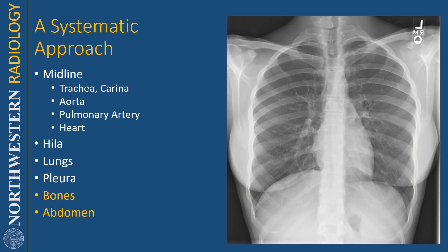Finally, I look at the bones and upper abdomen. I want to point out that there's something called the paraspinal line that parallels the vertebral bodies. If you see a bulge in the paraspinal line, that could mean the patient has a mass like a neurogenic tumor, or that there's a problem with the vertebral body like osteomyelitis or a compression deformity.